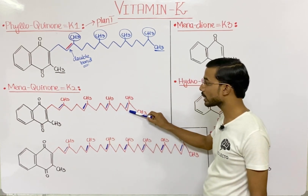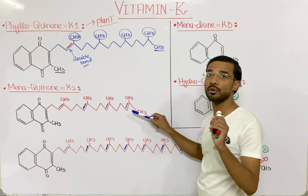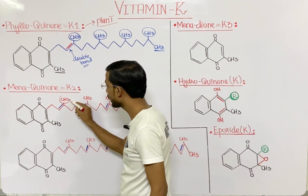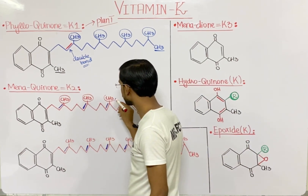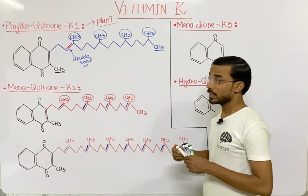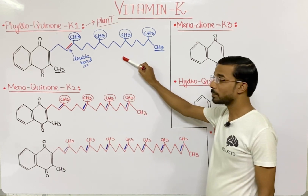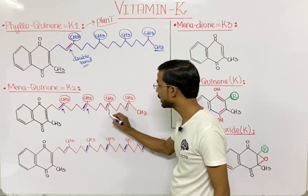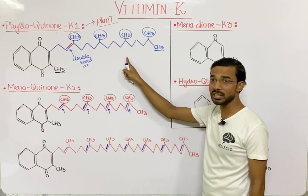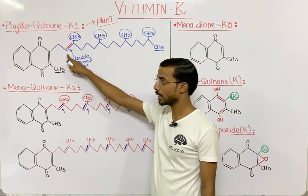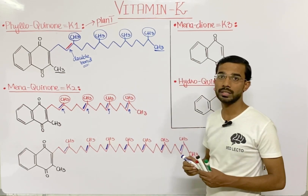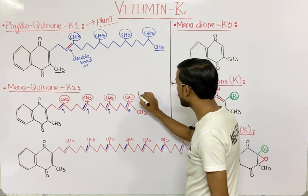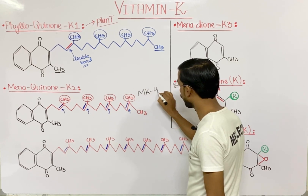The most important difference is the side chain — that's the point of difference between the different forms of vitamin K. You will again see the presence of different methyl groups. It looks similar to the previous one, but the point of difference is the double bonds. At each point you will see the presence of a double bond. In the previous one there is one double bond, but in this second case — menaquinone-4 — you will see the presence of four double bonds.